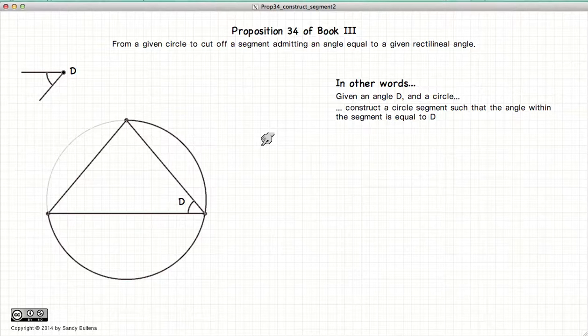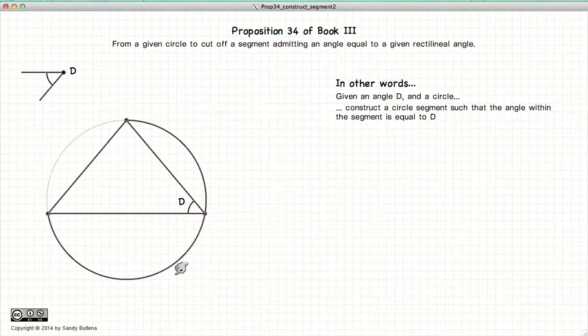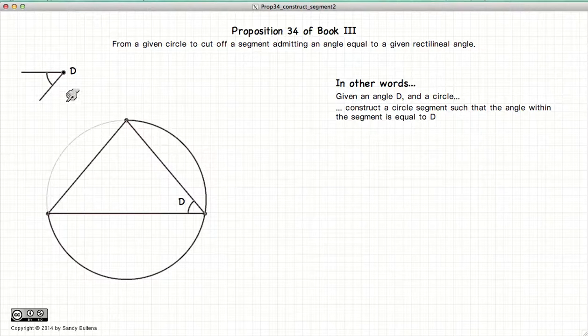This video presentation is going to be on Proposition 34 of Book 3, which states that if we have a given angle and a given circle, it is possible to construct a circle segment such that the angle within the circle segment is equal to the original angle that was given, in other words, D.